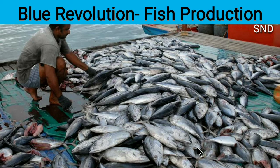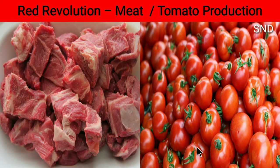Blue Revolution is related with fish production. Red Revolution is related with meat or tomato production.